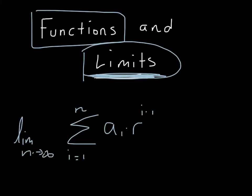What we're writing is n and then an arrow, saying it's getting close to infinity. In other words, if we were to have an infinite number of terms, what would our geometric series approach?